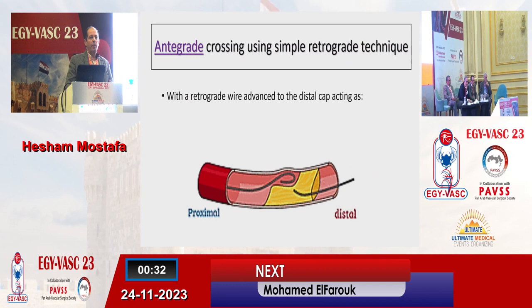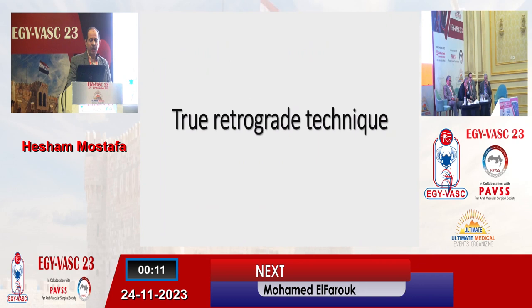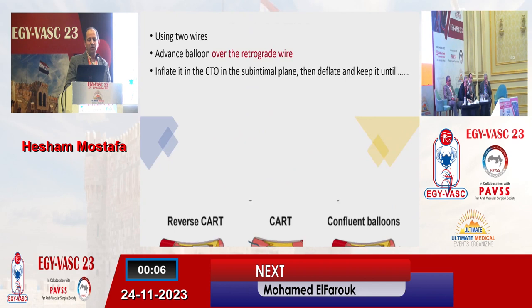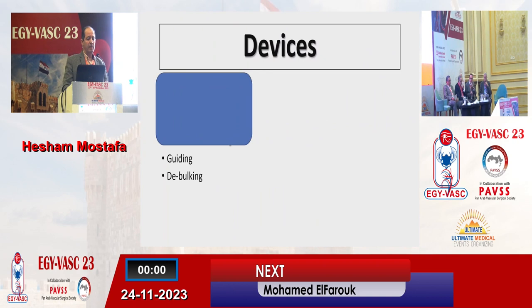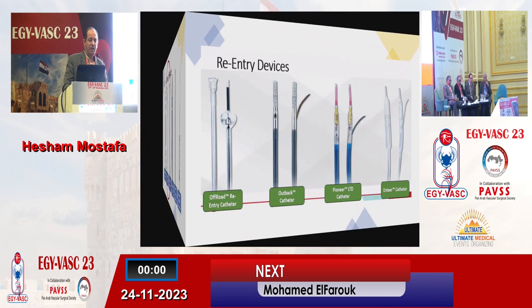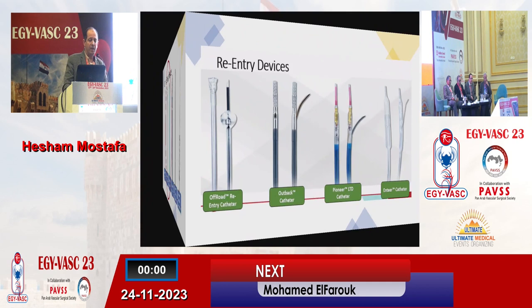The other strategy is to go by double wire technique retrograde. This is actually not true retrograde — it is again anterograde; the retrograde wire simply marks the site of the distal cap or acts as a target for the anterograde wire. For true retrograde technique, we have either CART, reverse CART, or the double balloons technique. The last approach is using devices. We have many devices — devices for guiding and debulking, and devices for crossing and re-entry. These are devices for crossing and re-entry — you know them all.